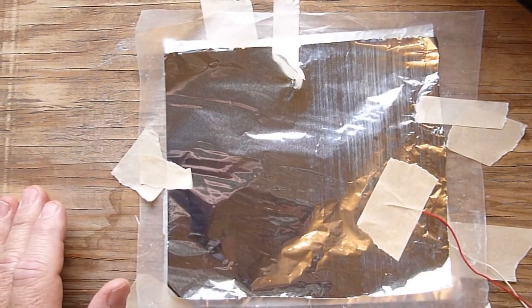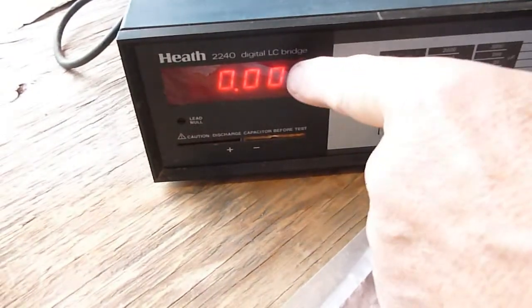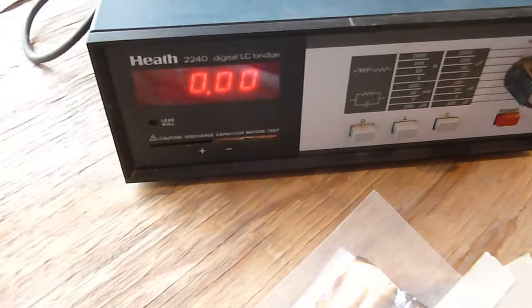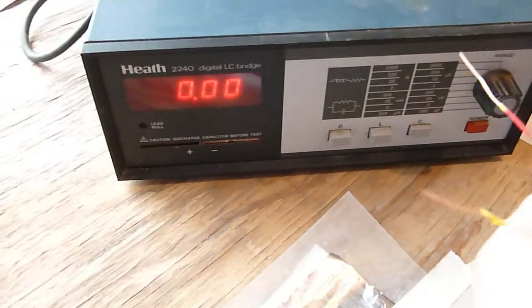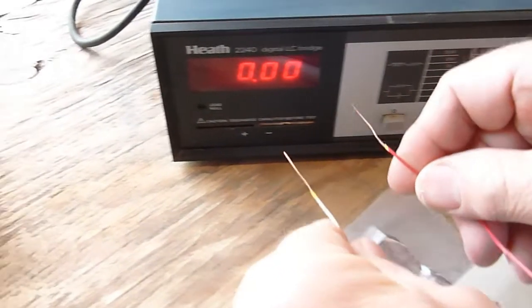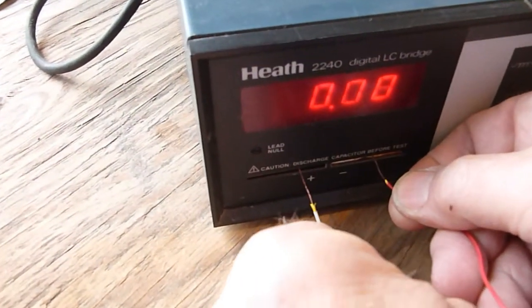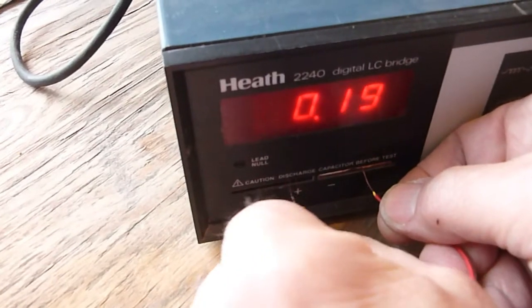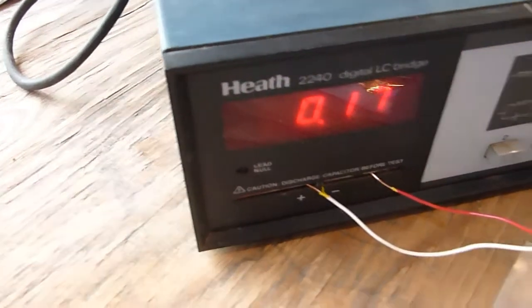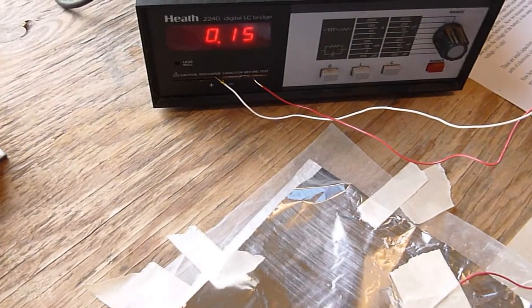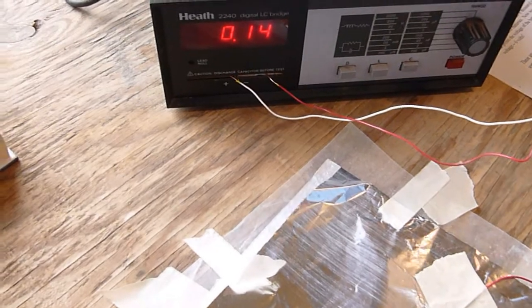Now we want to see how we did. We're going to use this Heath Digital LC Bridge. Here we're going to measure capacitance. And we've got it set to show the billionth of farad setting, which is basically nanofarads. And we insert our leads into the unit here. And we've got, right now, we've got 16, 15 hundredths of a billionth of a farad.